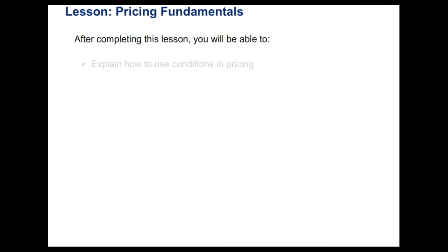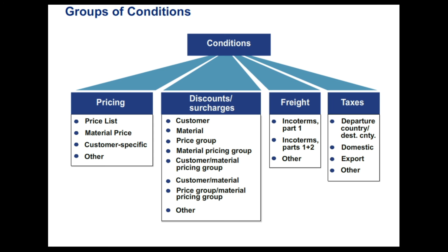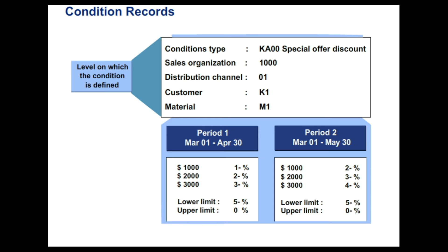Pricing Fundamentals. At the end of this lesson, you will be able to explain how to use conditions in pricing, demonstrate how to use condition records, and locate condition types in customizing. Listed here are some of the condition types with their access sequences provided in the SAP system. Condition records are stored according to this. You can add your own condition types and access sequences based on your need with the available fields. If you want to add new fields, you can do that in the field catalog. You can maintain your condition records specific to an access sequence with a validity period. You are allowed to maintain scales on your condition records provided you configure your condition type accordingly. You can even specify a lower and upper limit for the condition record so that manual changes will be allowed only between that.